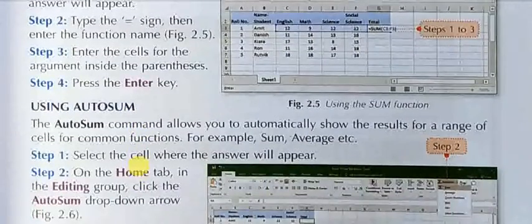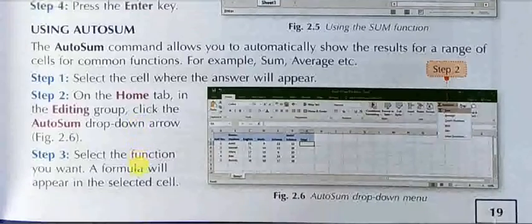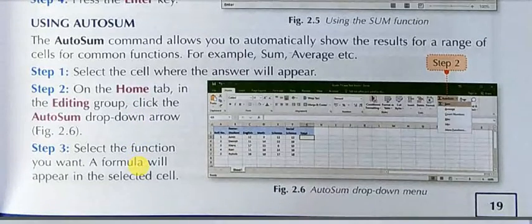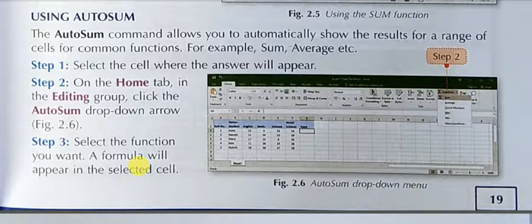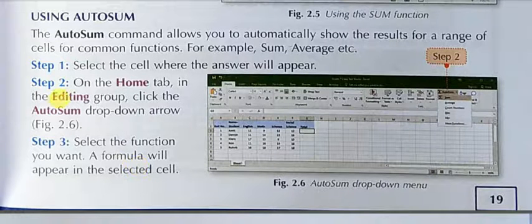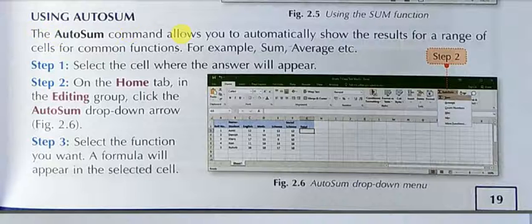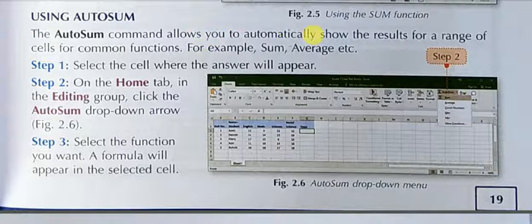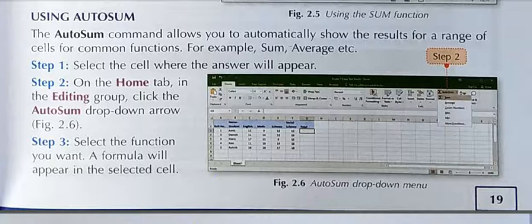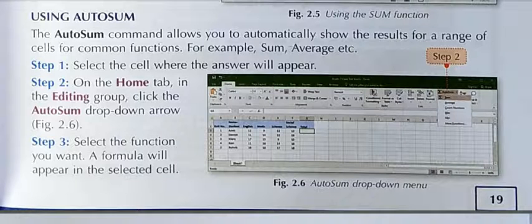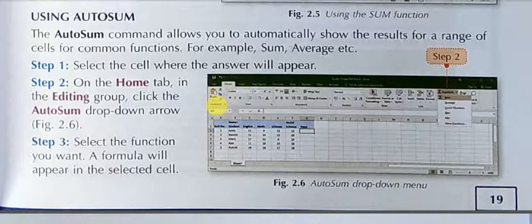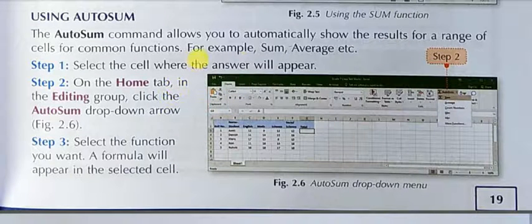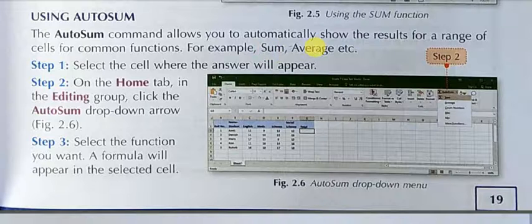Next, let's see AutoSum. AutoSum is mainly used to automatically find the sum. The AutoSum command allows you to automatically show the result of a range of cells for common functions, like sum, average, etc.